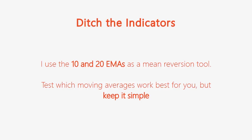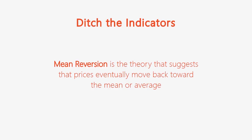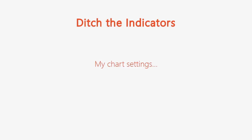Let's talk about mean reversion. This is really important because it prevents you from buying high and selling low. Mean reversion is the idea that prices always come back to an average in a trending market. The 10 and 20 EMAs come in as a way to avoid buying high and selling low — we want to do the opposite.